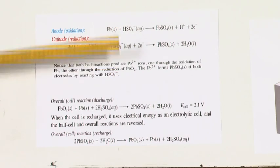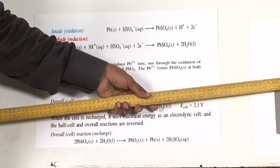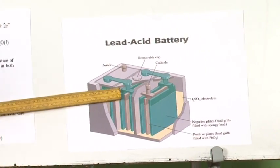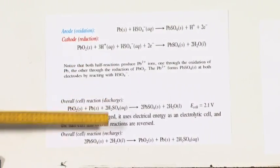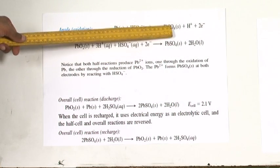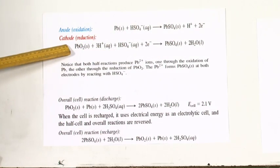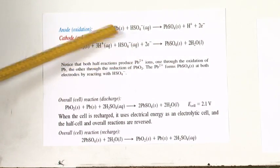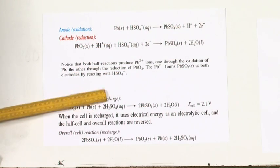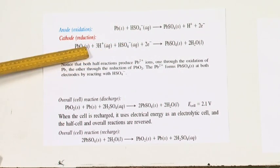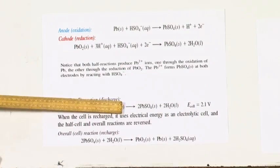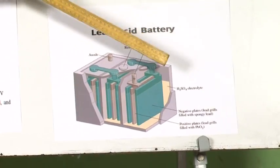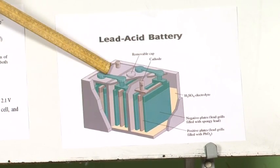To recharge the lead acid battery, an external source is provided and the same electrochemical cell becomes an electrolytic cell. During recharging, the PbSO4 formed is converted back to PbO2 and spongy lead — the reverse reaction takes place. You get back the reactants and the cell is once again ready to work. There are also mercury batteries and lithium cadmium batteries, which you may study from the textbook.